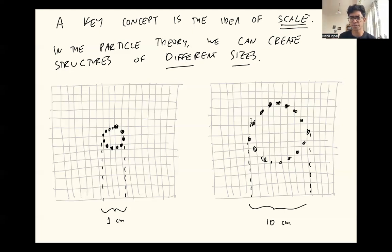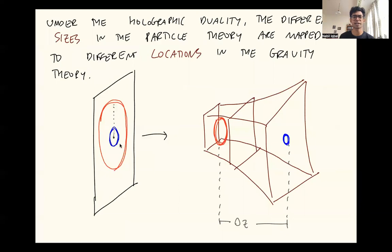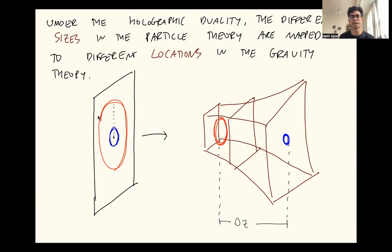Remember I told you earlier that this was a conformal field theory? When I say it's a conformal field theory, what I really mean is that the structures that I can make on it have different sizes, but there's nothing in the theory itself — like in the empty vacuum of the theory — that tells me what the preferred size is. The theory is agnostic as to whether it likes these guys better or these guys better. Now it turns out that under the holographic duality, objects which have different sizes in the particle theory are mapped to different locations in the gravity theory. In other words, this small blue circle will get mapped to one value of this new Z coordinate, whereas this larger red circle will get mapped to a different value of this Z coordinate. So it is the notion of scale in the field theory which is mapped to this extra dimension in the gravitational theory — sizes are mapped to this extra dimension.